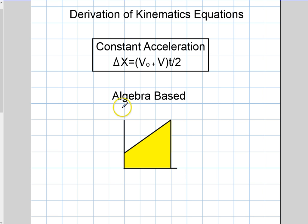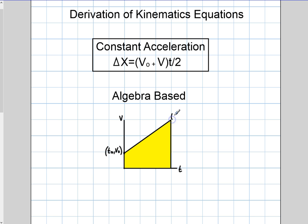I'm going to show you where this comes from — basically it comes from the graph. If I have a velocity graph versus time, you can see the graph right there. I start with some initial velocity, so that point on the graph is going to be t-initial comma v-initial. I'm looking at a straight line here, and if I go up to t-final comma v-final — what do you notice about that shape? That's a trapezoid. So if I wanted to find the displacement from this graph, I would need to find the area.